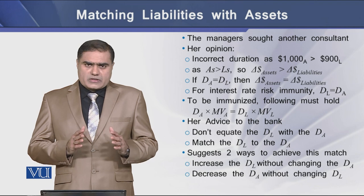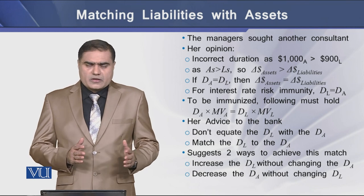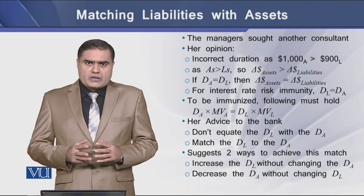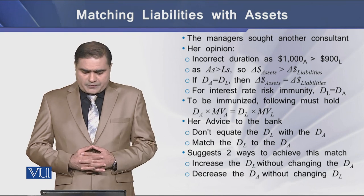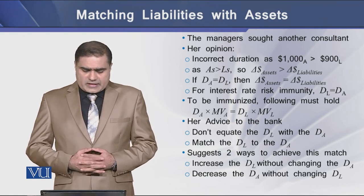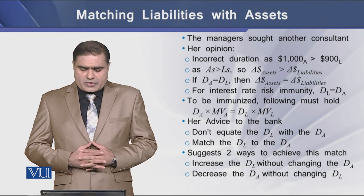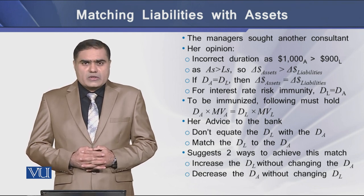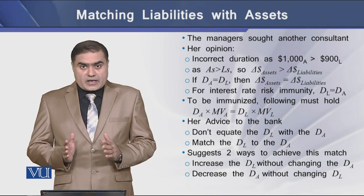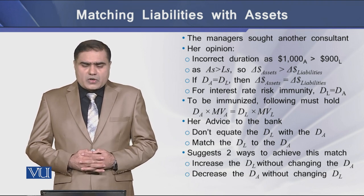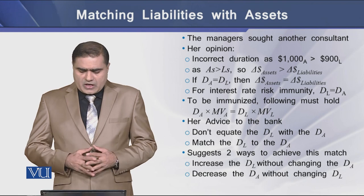But bank management is not satisfied with this opinion, so they sought a second consultant. This second consultant has a different view. He says that the duration of 2.56 years is incorrect, because the bank's assets are more than its liabilities. This means that since bank assets are greater than bank liabilities, the price changes in the assets should also be higher than the price changes in the liabilities.